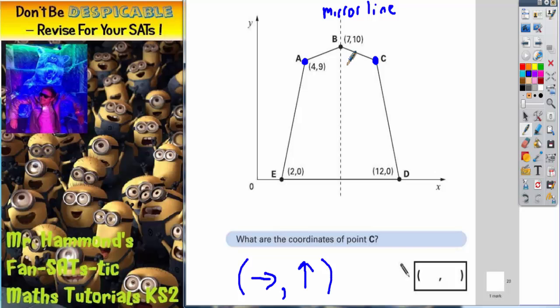It's the same gap from point C to the mirror line as it is from point A to the mirror line. That distance is symmetrical. So if we can work out this distance here, we can use that information to work out this distance and therefore find how far across point C is.